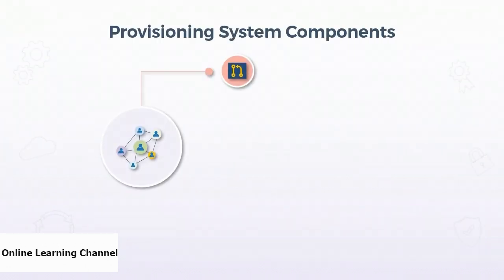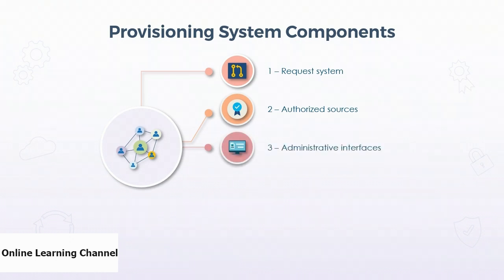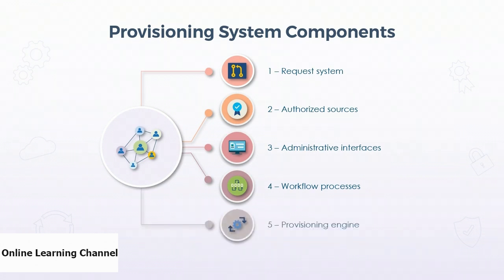A proper provisioning system has several components. The request system gives business users the ability to generate requests for account modifications or revocations. Authorized sources provide authorized origination points (system of record) for user identity data — such as Active Directory or OpenLDAP. Administrative interfaces provide process and technical controls through centralized and delegated functionality, such as a service desk. Workflow processes include approval processes for standard and emergency changes. The provisioning engine — often provided by the directory service or network OS — assigns permissions and rights to groups and users.